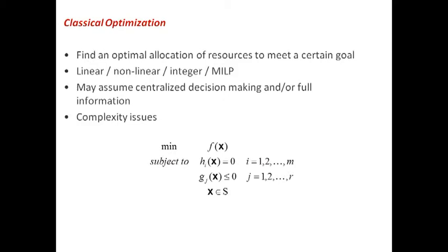You minimize some function, and that's a function of a vector of elements, so f of vector x. The same thing is maximizing—you can just maximize negative f of x. And then you subject that minimization or maximization problem to a set of constraints. So there are m equality constraints, which is function h_i of x equals zero, and then a set of r inequality constraints, g_j of x is less than or equal to zero. If you don't have this x belongs to S, forget this for now.